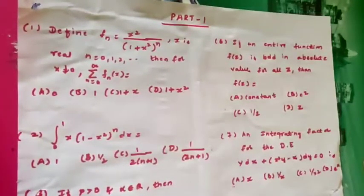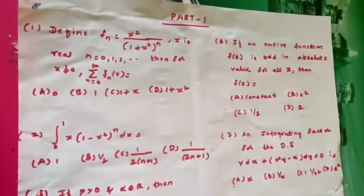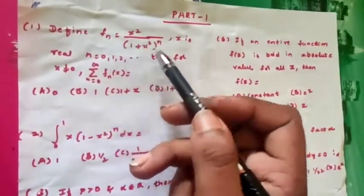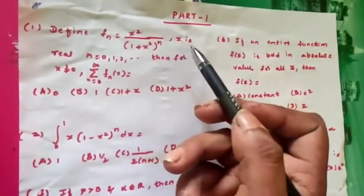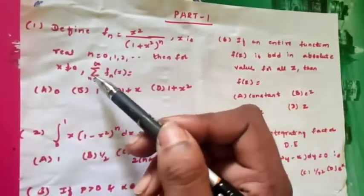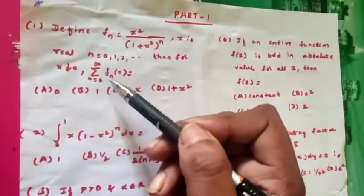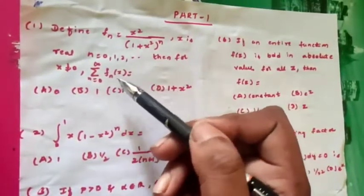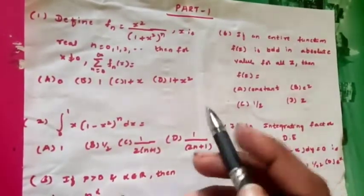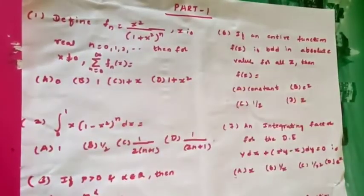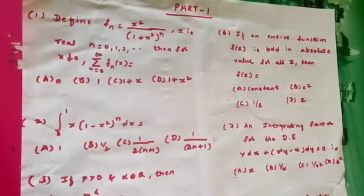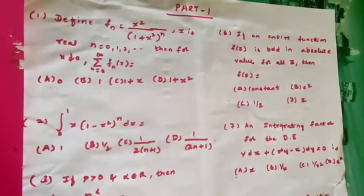APSET and many state entrance and MSc entrances. The first question: define f_n(x) = (x²/(1+x²))^n, where x is real and n = 0, 1, 2, and so on. Then for x not equal to 0, find the value of summation n = 0 to infinity of f_n(x). This seems very difficult but is actually very simple.